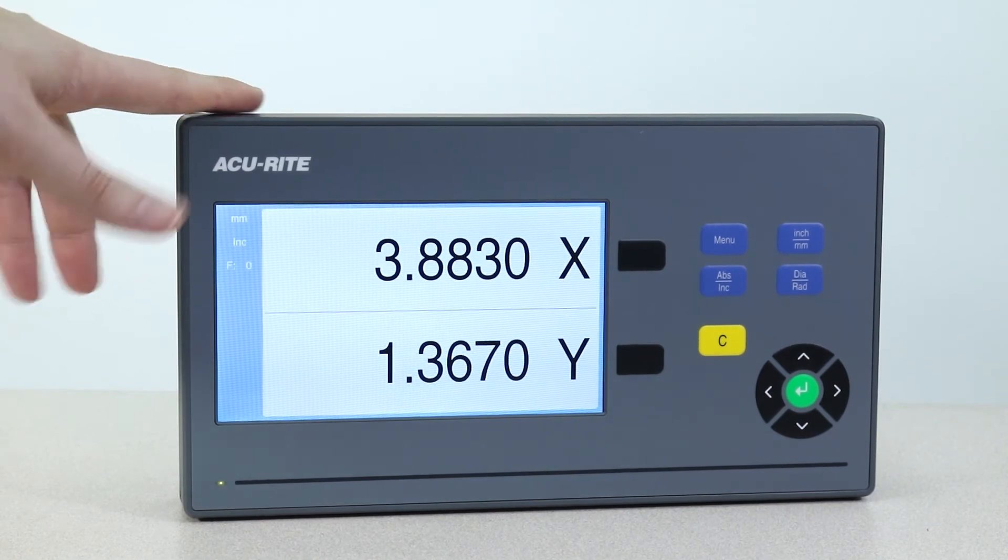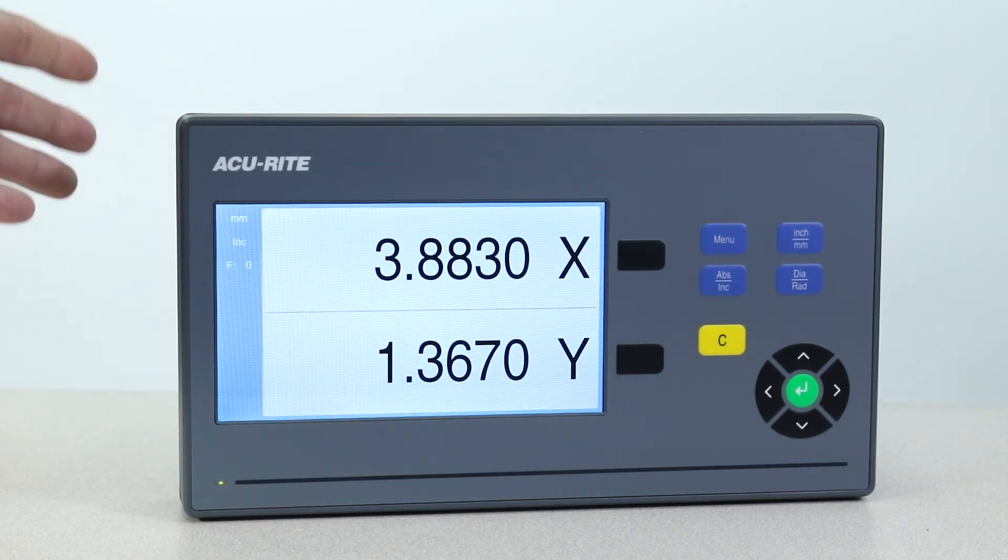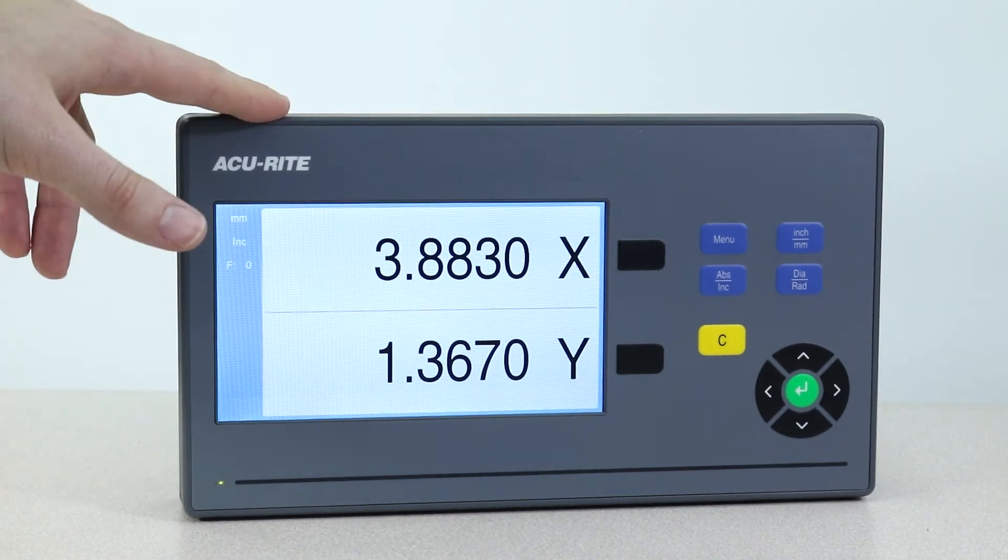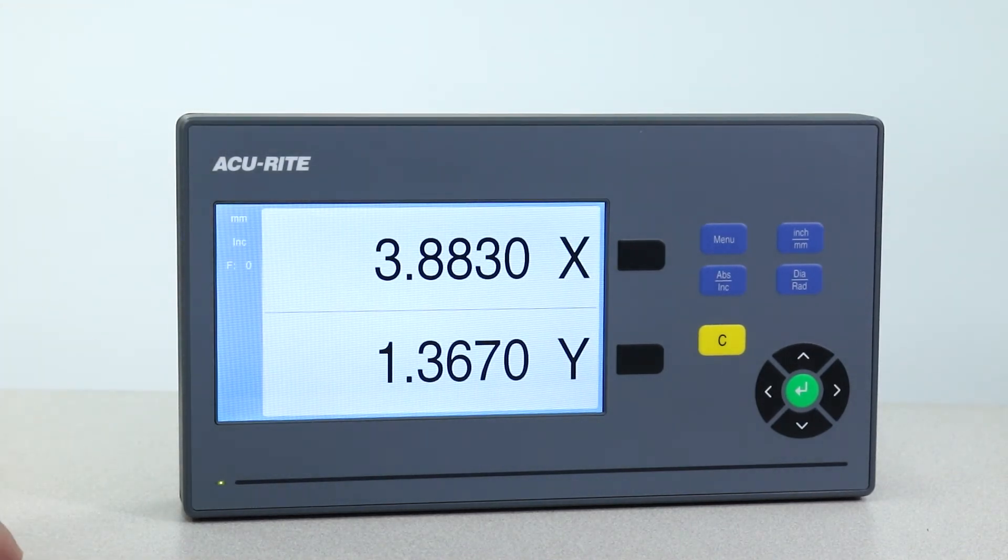Presets are a feature of the 203 and upwards, so with the 102 you can only do a reset to zero. If you need presets, take a look at our video on the Accurite DRO 203. It should pop up in the annotations, and I'll also put a link in the video description.